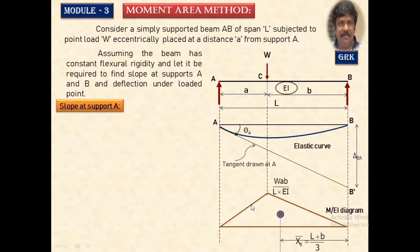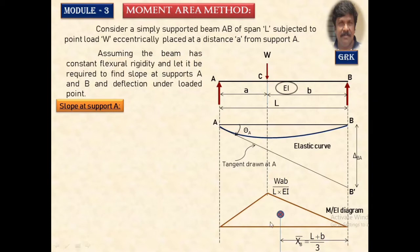Draw the M/EI diagram. For an eccentric loading system, the maximum bending moment under the load equals W·a·b/L, and dividing by EI gives the M/EI diagram. The centroid of this diagram from support B lies at a distance (L + b)/3, and from support A it lies at (L + a)/3.